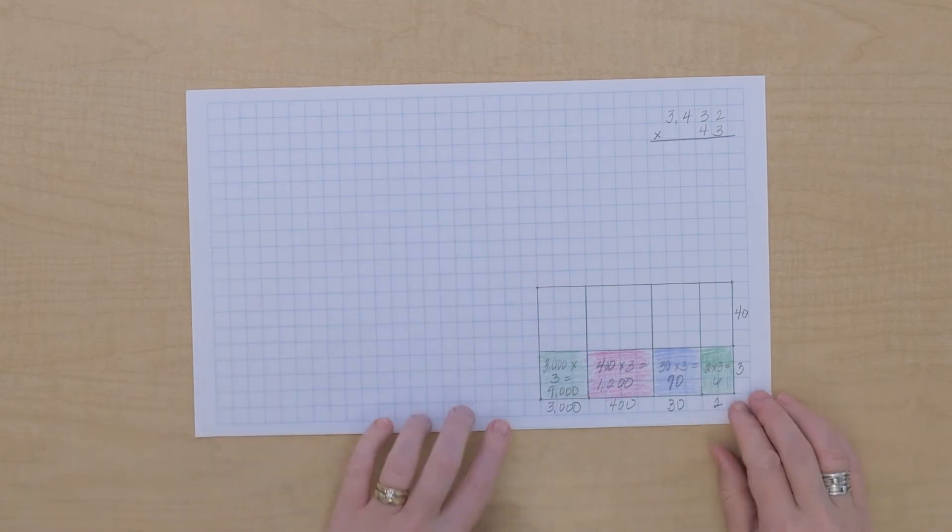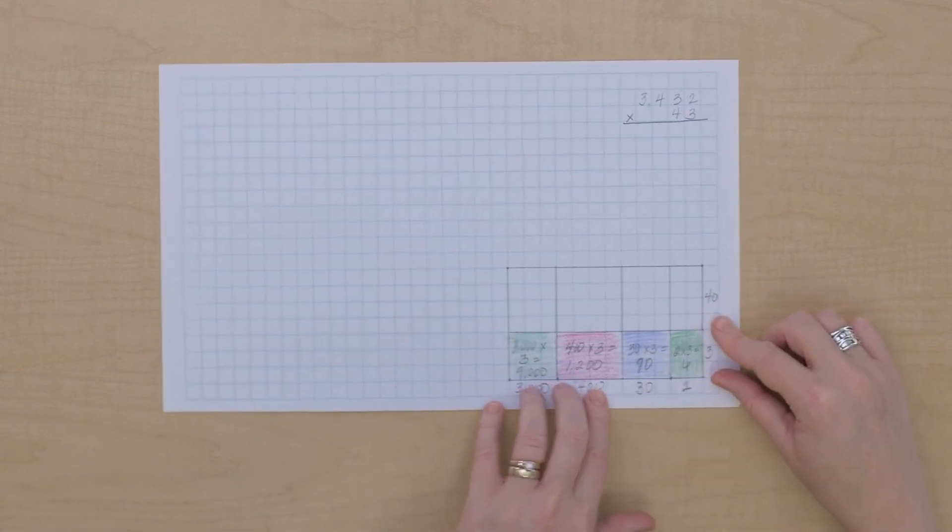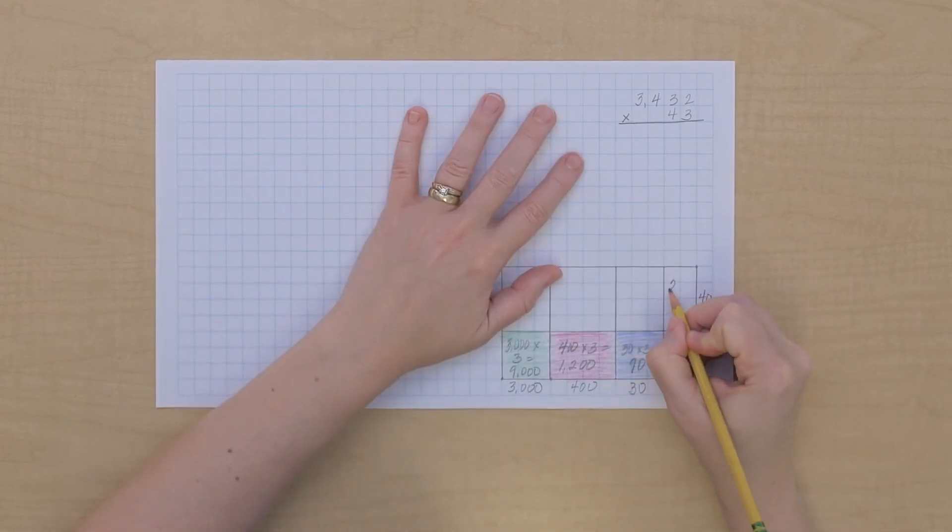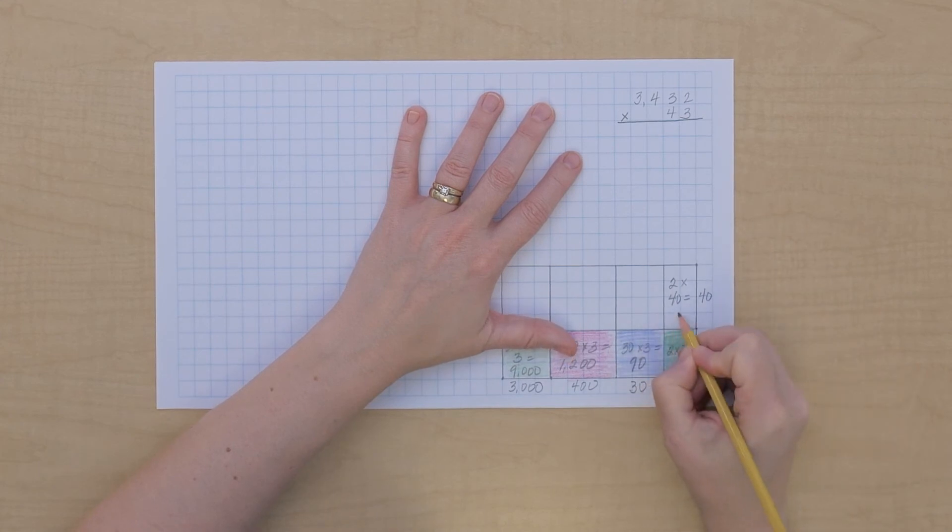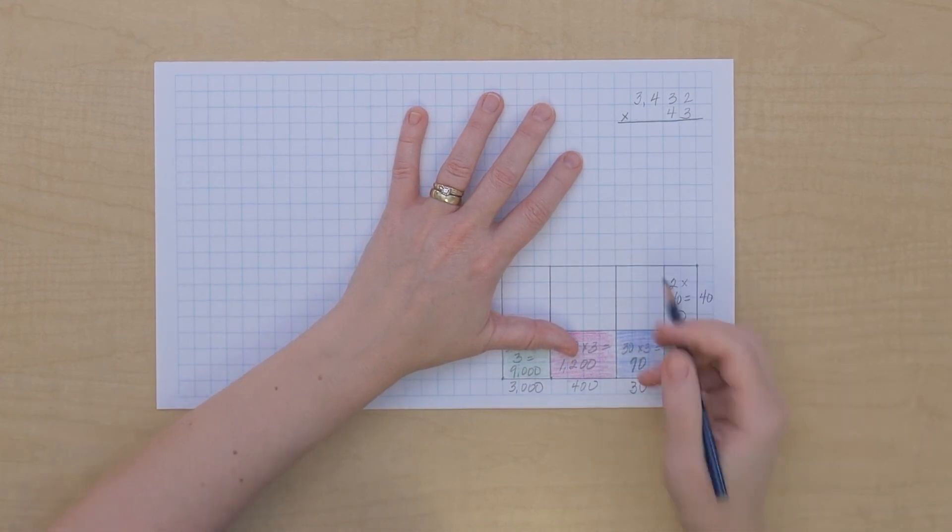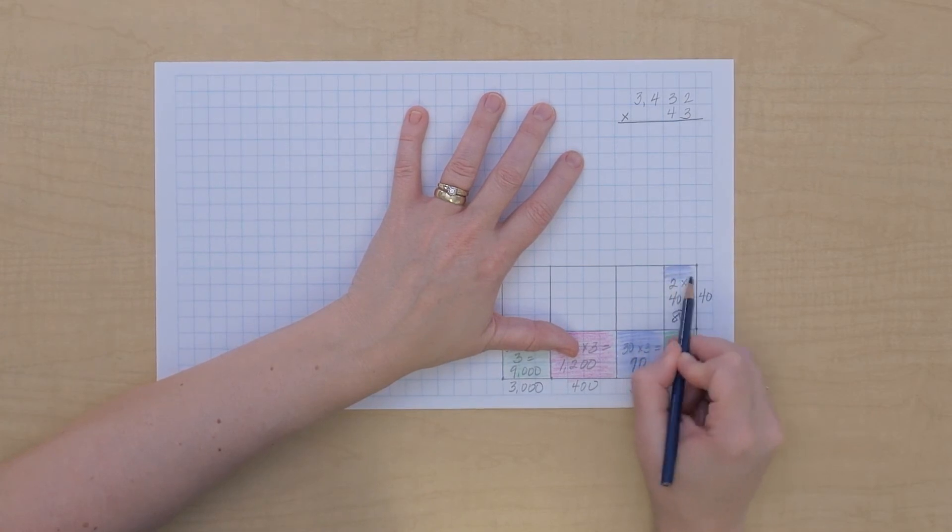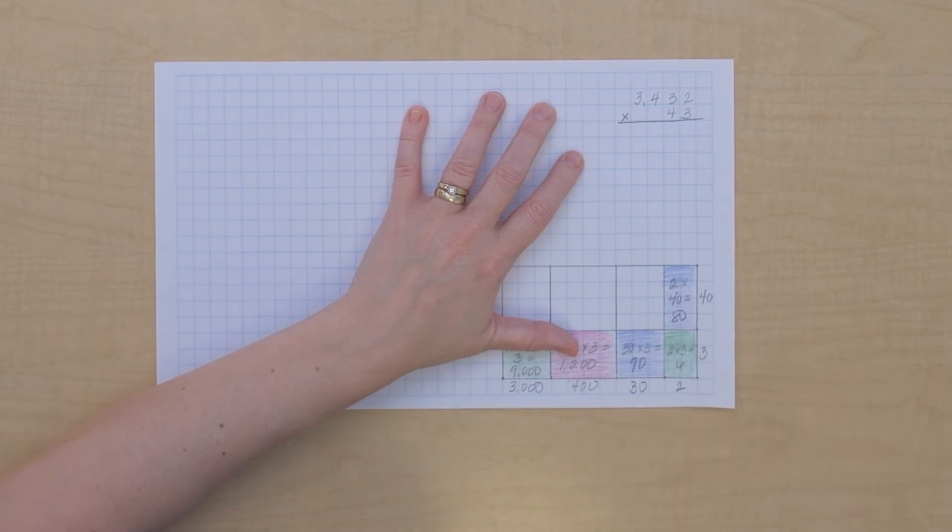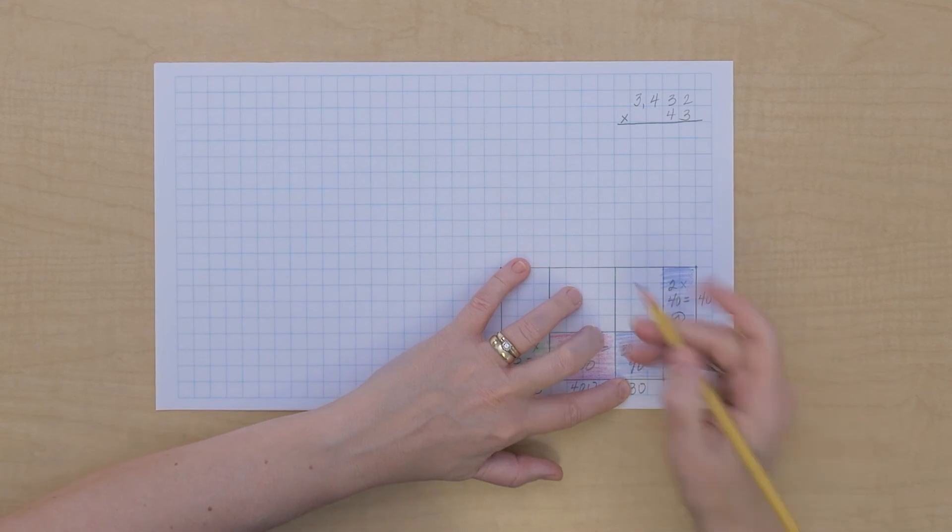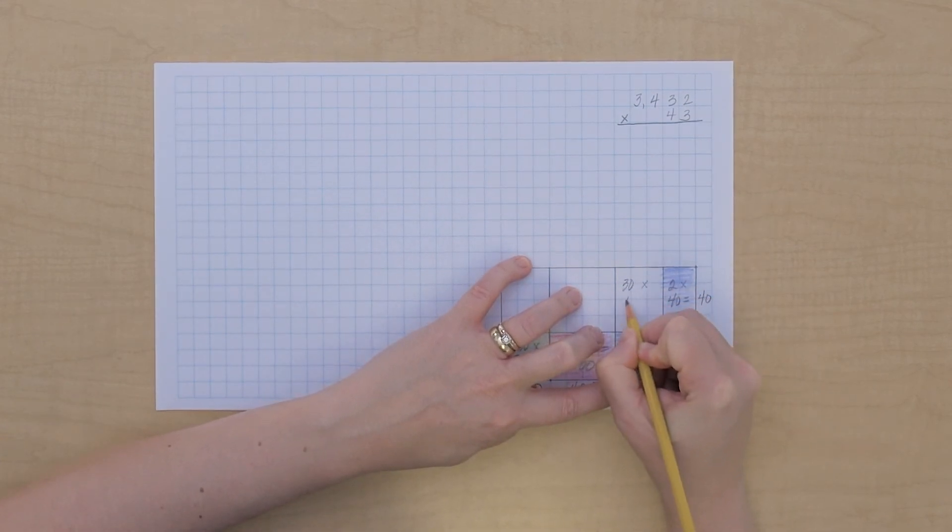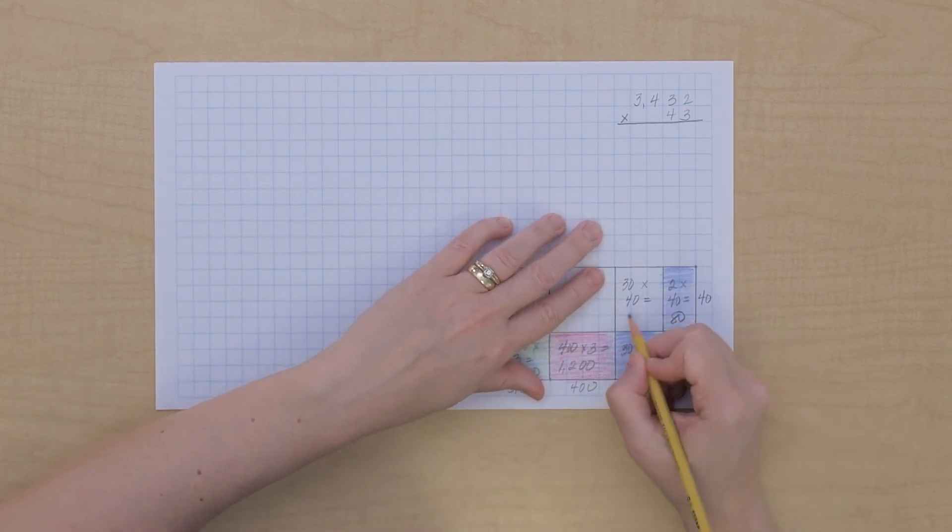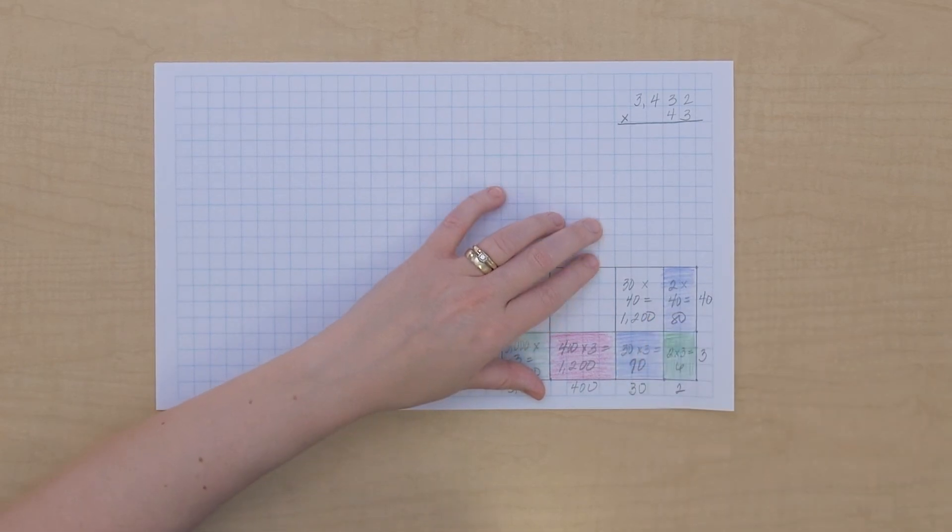All right, we've done our units multiplications, now let's do our tens multiplication. So two times 40 equals 80, we're gonna have that a blue one for tens. Here we have 30 times 40. We know tens times tens gives us hundreds, so three times four is 12, so we'll have 1200, that'll be a red rectangle. And then 400 times 40, hundreds times tens.